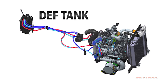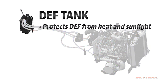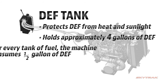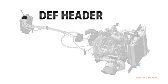The DEF tank is located and designed to protect the DEF from heat and sunlight. It is designed to hold approximately 4 gallons of usable DEF. On average, for every tank of fuel the machine will consume half a gallon of DEF. The DEF tank has a DEF header mounted to the top of the tank.